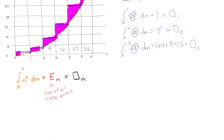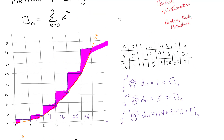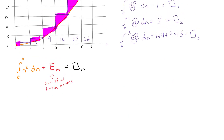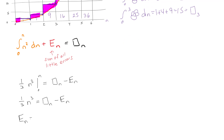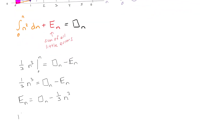The whole point is to find a closed-form solution. I can use integration: integrating n squared from 0 to n gives one-third n cubed, and that equals box sub n minus e sub n. Solving for e sub n gives: e sub n equals box sub n minus one-third n cubed. Similarly, e sub n minus one equals box sub (n minus 1) minus one-third times (n minus 1) cubed.